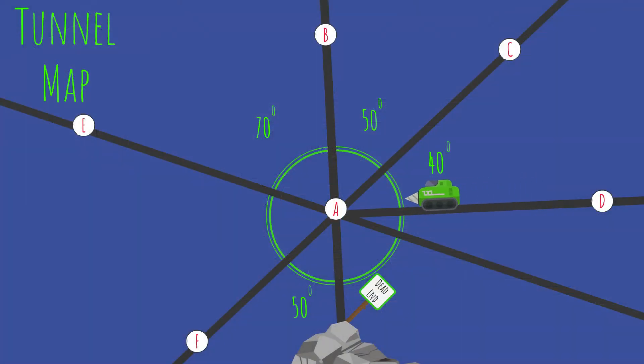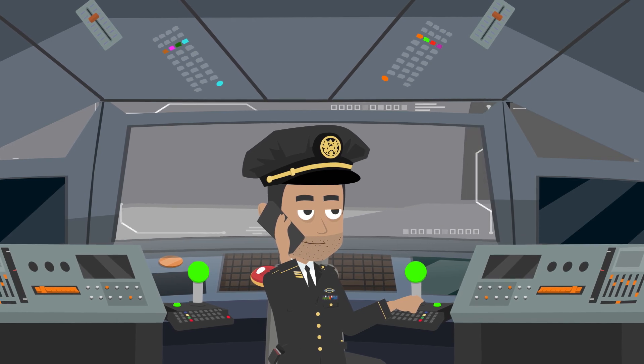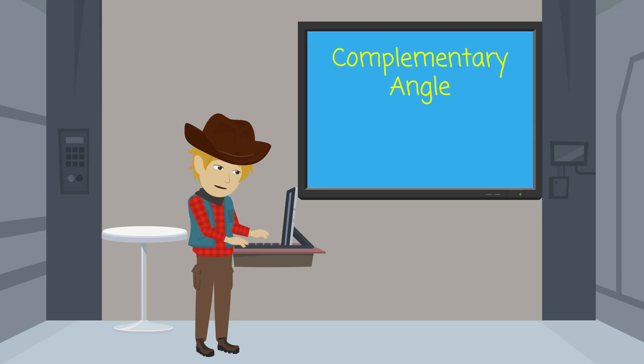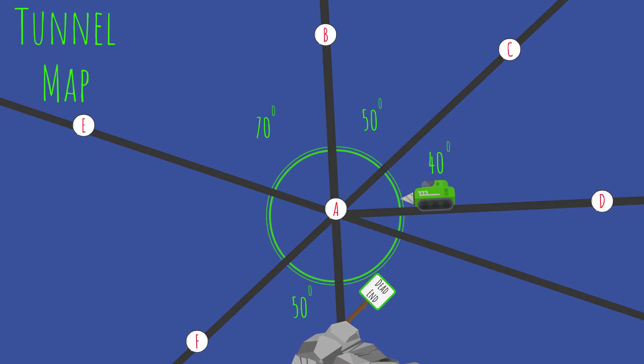I'm coming up on the first intersection. The chart says the exit tunnel makes a complementary angle here. So a complementary angle must add up to 90 degrees. I can see on the map that angle CAD is 40 degrees, and angle CAB is 50 degrees. Those two angles add up to a total of 90 degrees and are complementary.